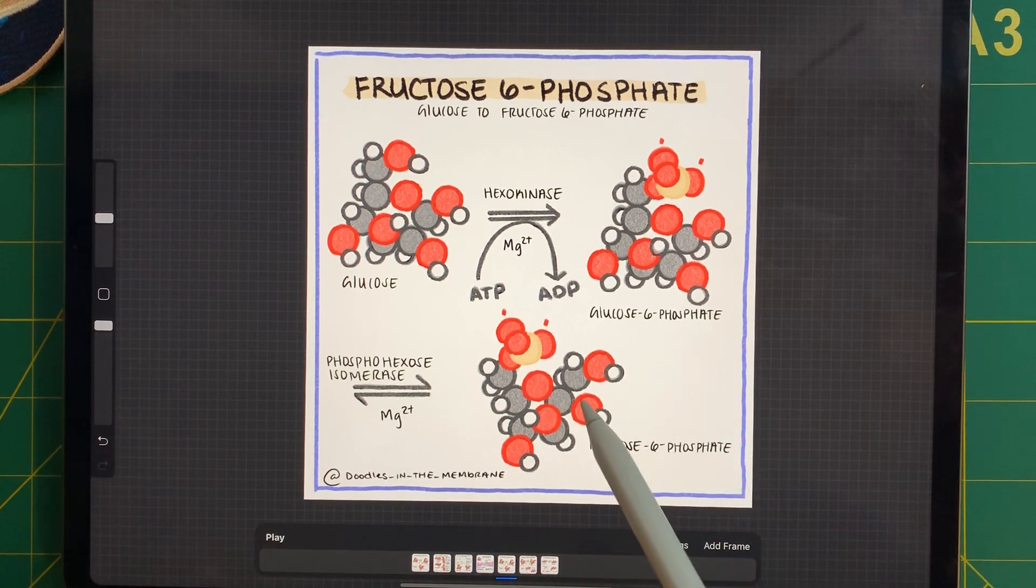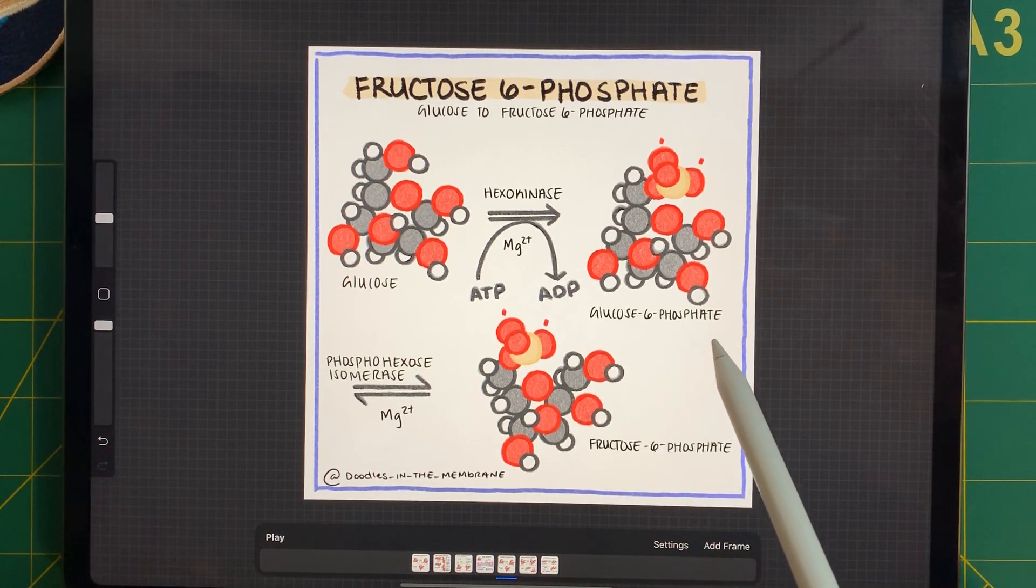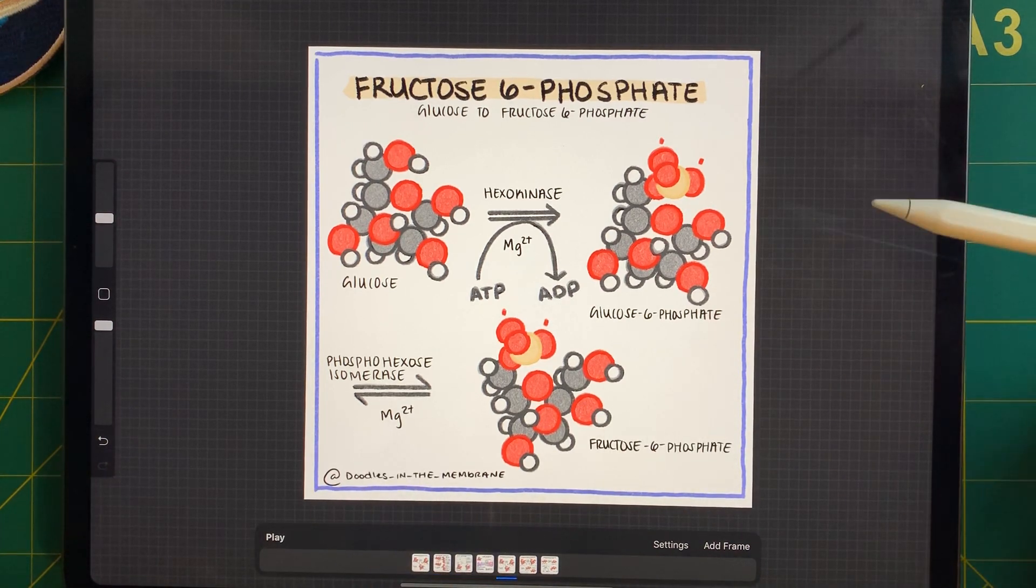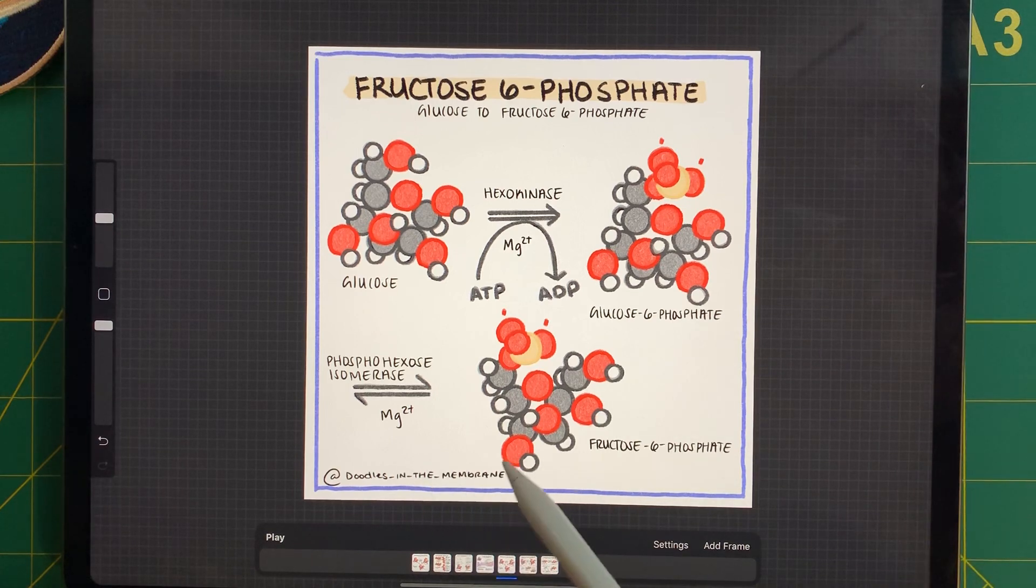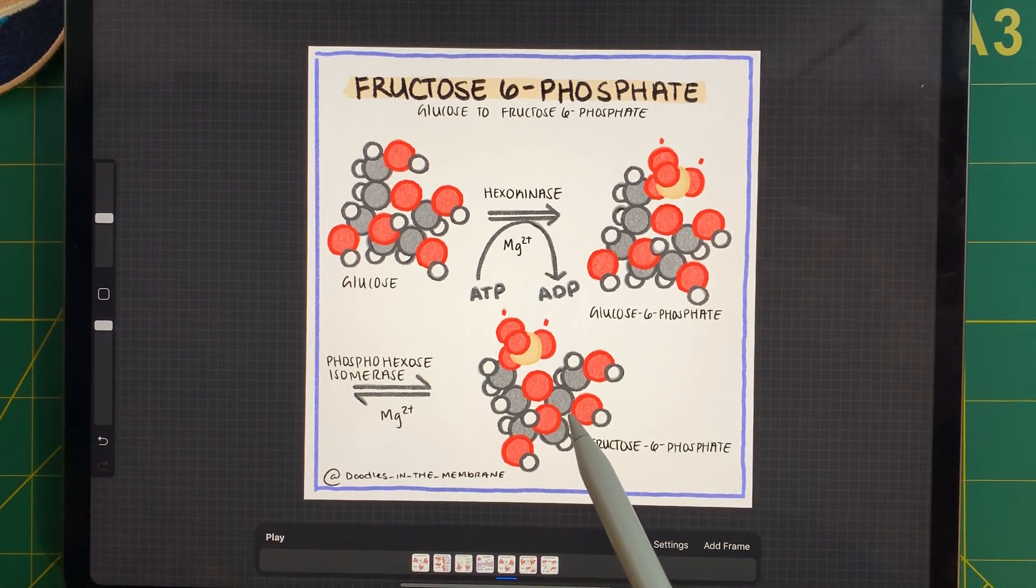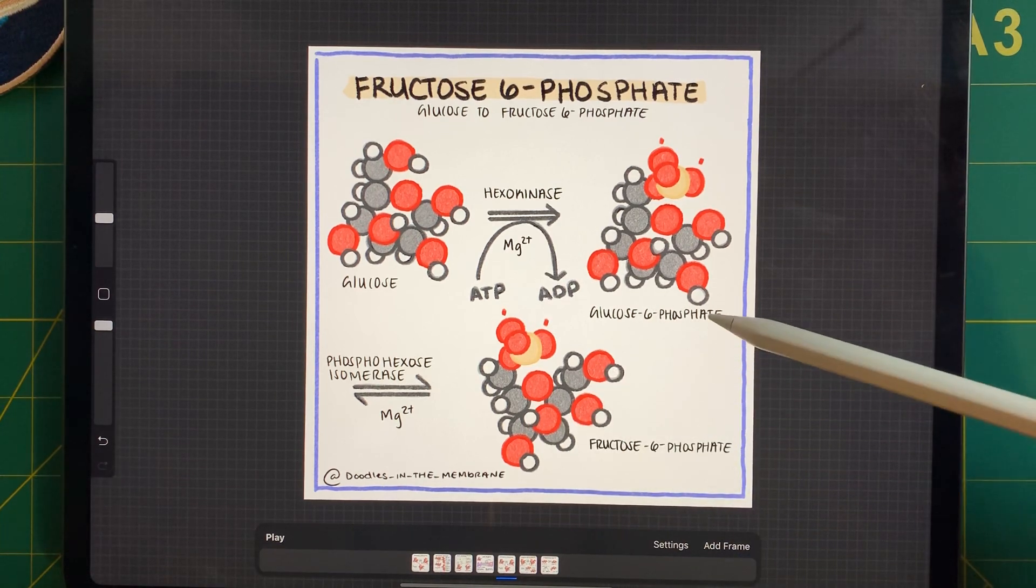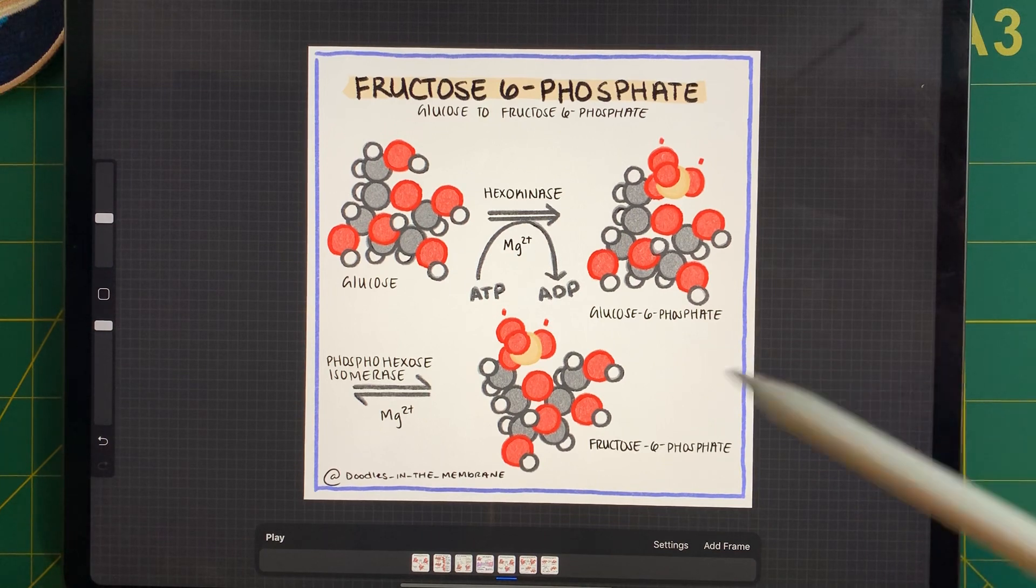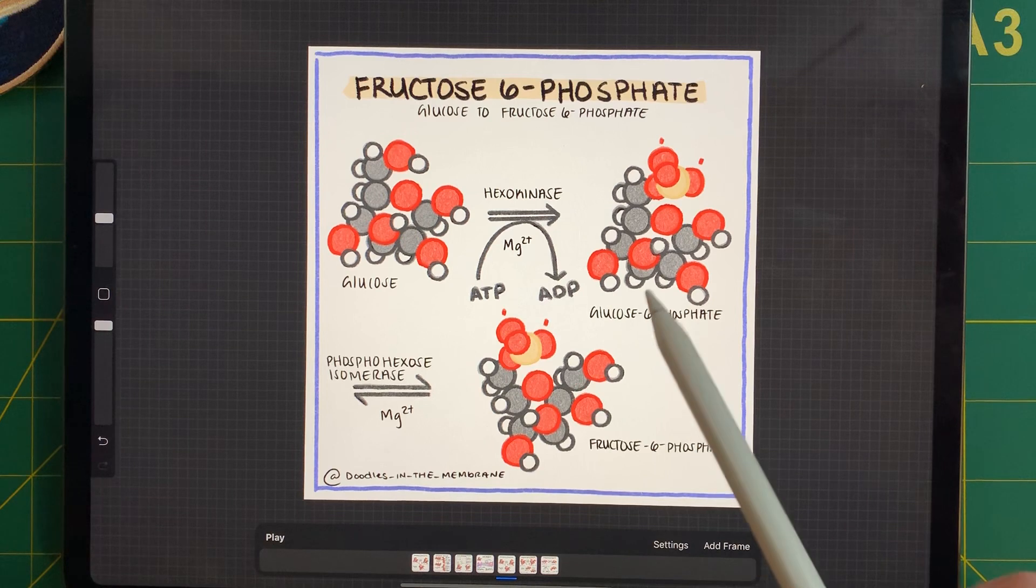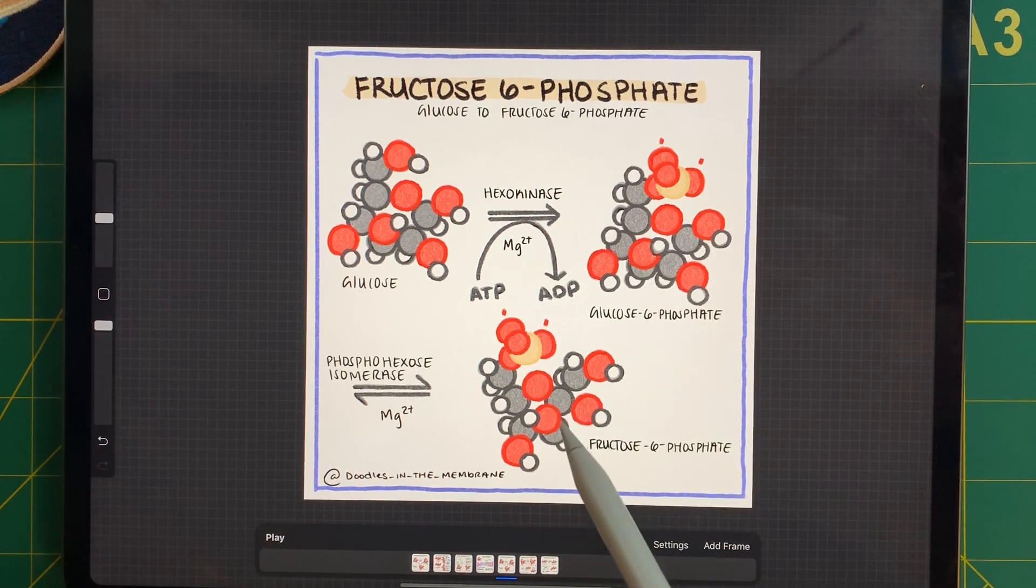Now, the next reaction is that we're going to react glucose 6-phosphate with phosphohexoisomerase. So now we're talking about a new subtype of enzymes, isomerases. And all they do is turn the molecule which they're reacting with into an isomer of itself. In this case, we're turning glucose 6-phosphate into fructose 6-phosphate, an isomer of glucose. So we're going from a 6-membered ring to a 5-membered ring.